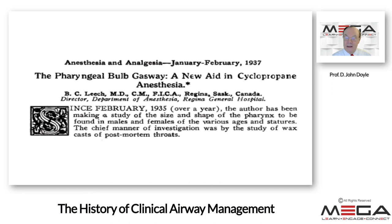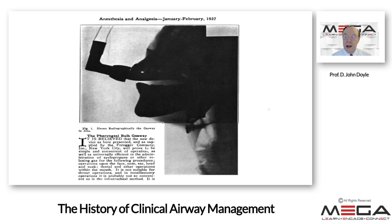The pharyngeal bulb airway was sometimes used with cyclopropane anesthesia, which has the disadvantage of being highly explosive — if you use cautery, you can get an explosion. Cyclopropane eventually faded away as halothane became available. Here is an X-ray showing the pharyngeal bulb gas airway in place, illustrating how important historical developments are often built upon earlier ones.